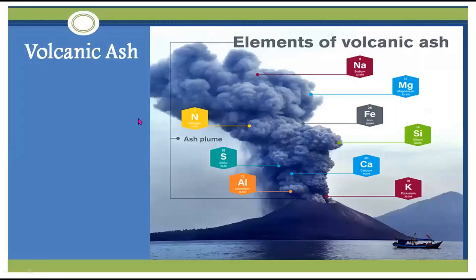One of the materials is volcanic ash. When it comes to volcanic ash, the elements present include sodium, magnesium, iron, silicon, calcium, and aluminium. These elements are what make up what we call volcanic ash.